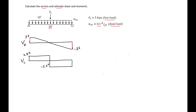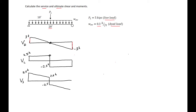Now we have our unfactored dead load shear and live load shear. We can combine these to find our service level shear, Vs. Our service level shear at the left end is 2.5 plus 3 equals 5.5 kips. At mid-span we have 2.5 kips from live load plus 0 from dead load, then we drop to negative 2.5 kips, sloping down to negative 5.5 kips at the right end.